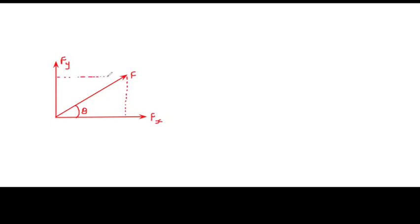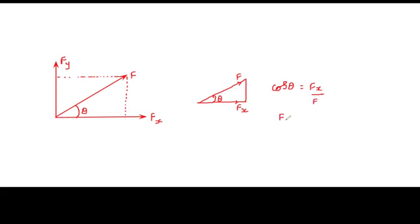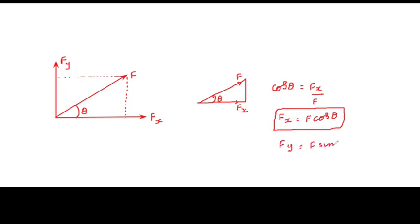Considering a right triangle, we can observe that the hypotenuse is force F, the adjacent side is Fx, and the angle is theta. From this triangle we can write: cos theta equals adjacent side by hypotenuse, so Fx equals F times cos theta. Similarly, from the same triangle, Fy equals F times sin theta.